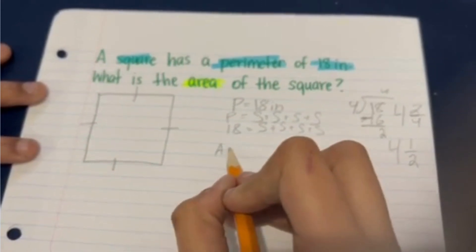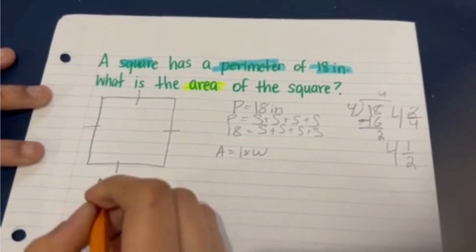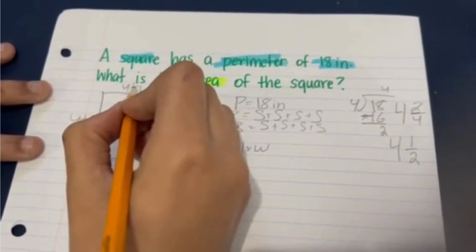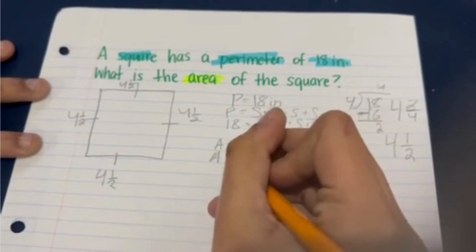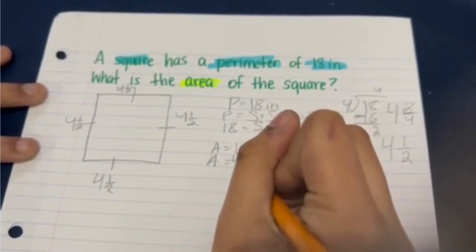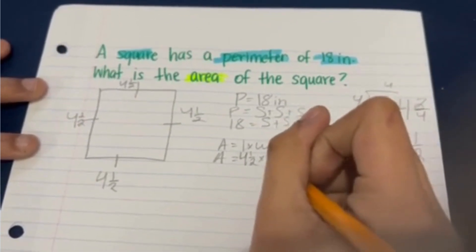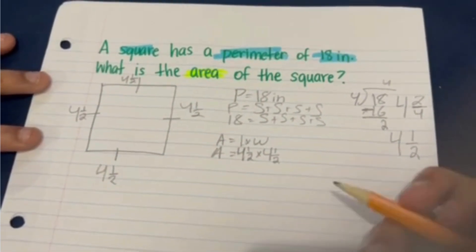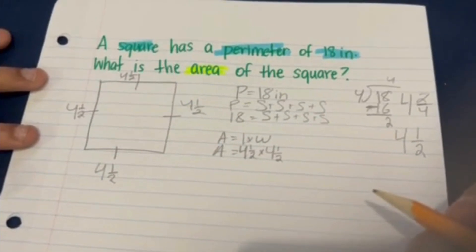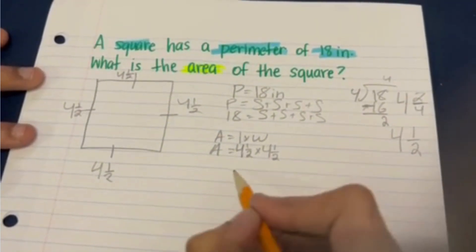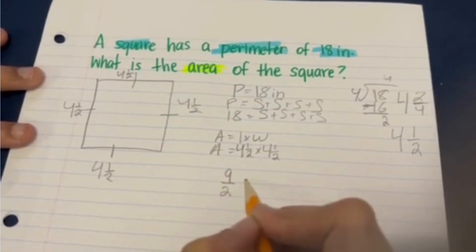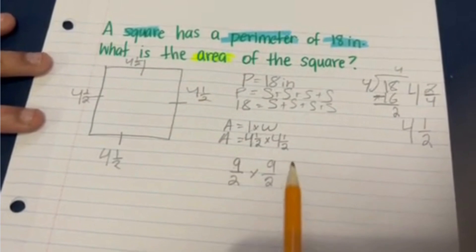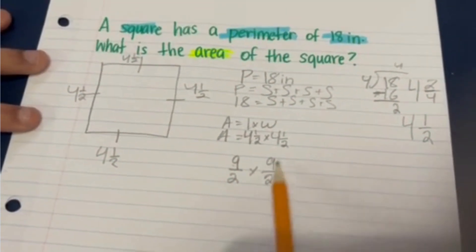Now since we know that area equals length times width, and all of these sides are four and a half, the area equals four and one half times four and one half. To multiply fractions, we have to turn any mixed numbers into improper fractions. Four and one half as an improper fraction is nine halves, so we have nine halves times nine halves.